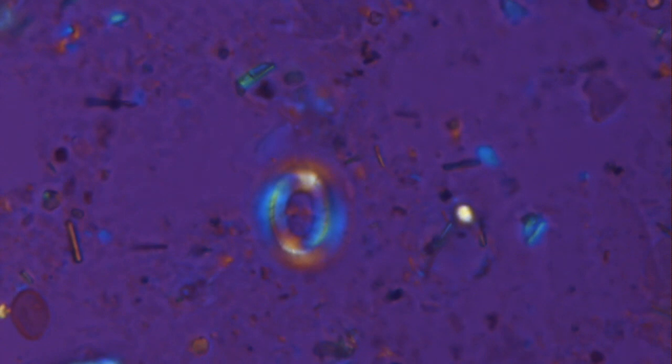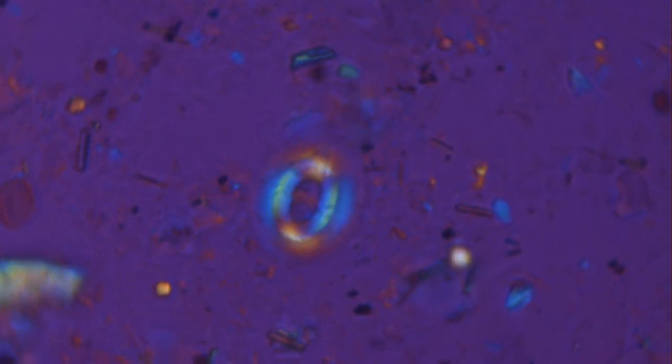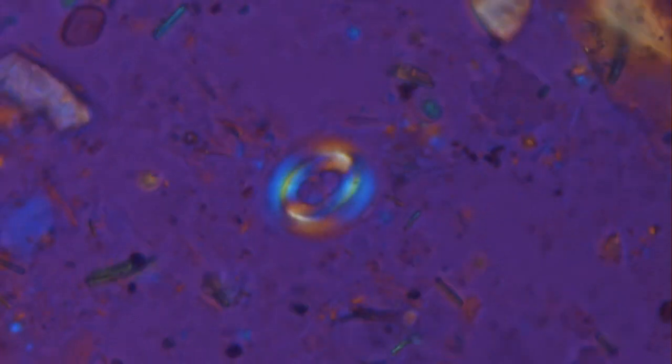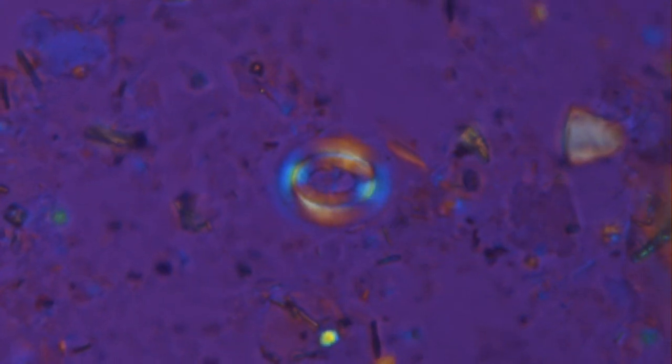When inserted, the gypsum plate gives a purplish color to the otherwise black color or extinction in cross polars. But it also gives a bluish and yellowish colors to opposite quadrants. Why?